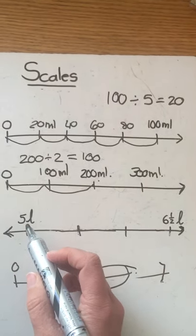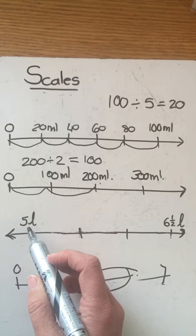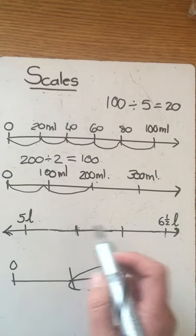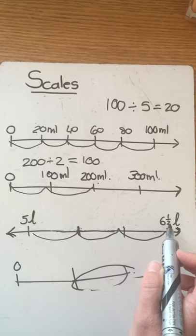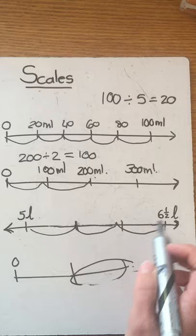Now over here we have five liters and then we have two lines so it's one, two, three spaces and then we have six and a half liters.